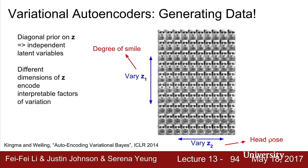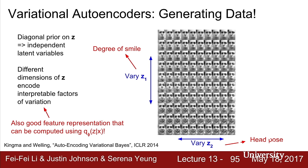When trained on faces, varying Z1 up and down changes the amount of smile (from frown to big smile), while varying Z2 left to right changes head pose. The learned Z features are also good feature representations since they encode interpretable semantics. We can use Q(Z|X) to map input images to Z and use these as features for downstream supervised tasks like classification.